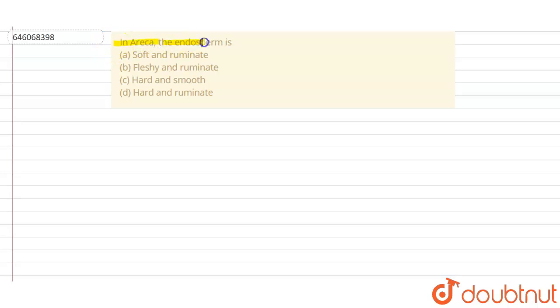In Erica, the endosperm is... Okay. So they are asking, in Erica, what type of endosperm is present? Option A: soft and ruminate. Option B: fleshy and ruminate. Option C: hard and smooth. Option D: hard and ruminate. Okay, so endosperm, we know